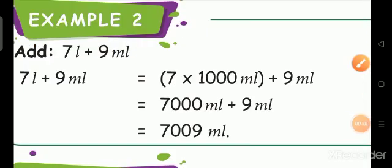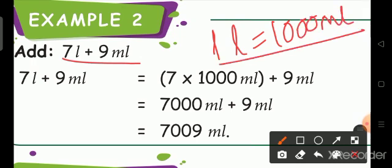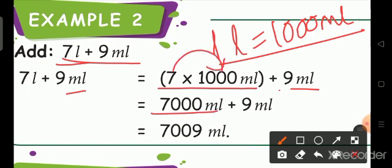Next, see one more example: add 7 liter plus 9 milliliter. We already know 1 liter is equal to 1000 milliliter. So, 7 liter is equal to 7 into 1000 milliliter plus 9 milliliter. Then 7 into 1000 gives the answer 7000 milliliter plus 9.